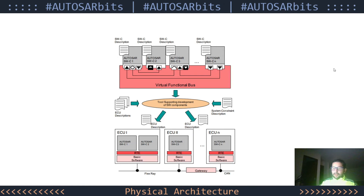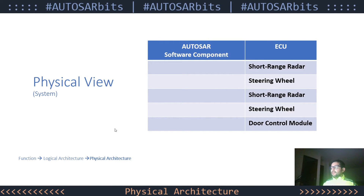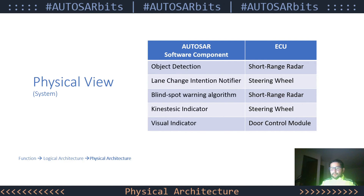The allocation process is shown in this diagram. We basically go from having this logical architecture into an allocation of these components into a set of ECUs that, as we have already mentioned, are connected to a vehicle network. So consider that we have this set of ECUs: short-range radar, steering wheel, door control module. We want to allocate our components into these ECUs. We assign the object detection component to the short-range radar, as well as the blind spot warning algorithm component into it.